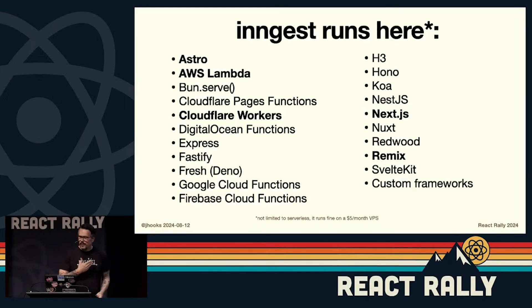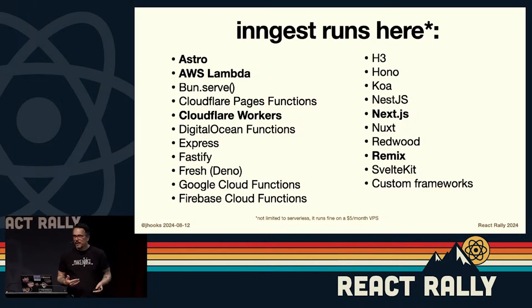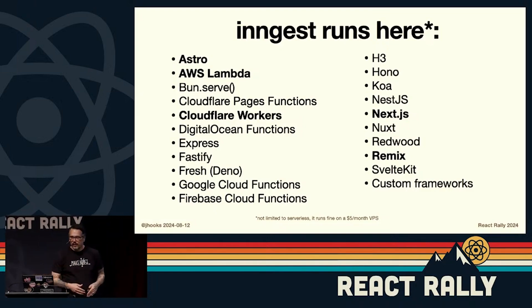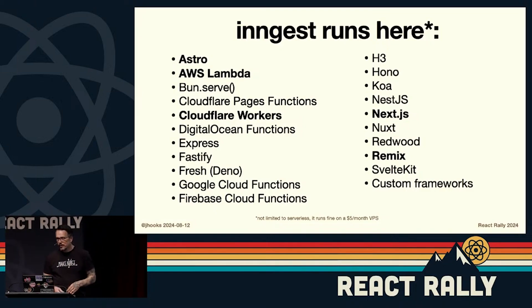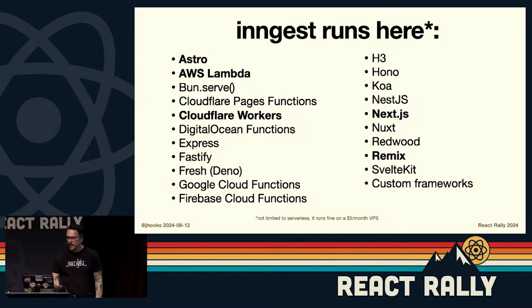This is the Next.js application I was demoing, and it really runs anywhere that your React application will run — Astro apps, Lambda, Cloudflare Workers, Remix, Hono, whatever your preference. Inngest will run wherever you're at.